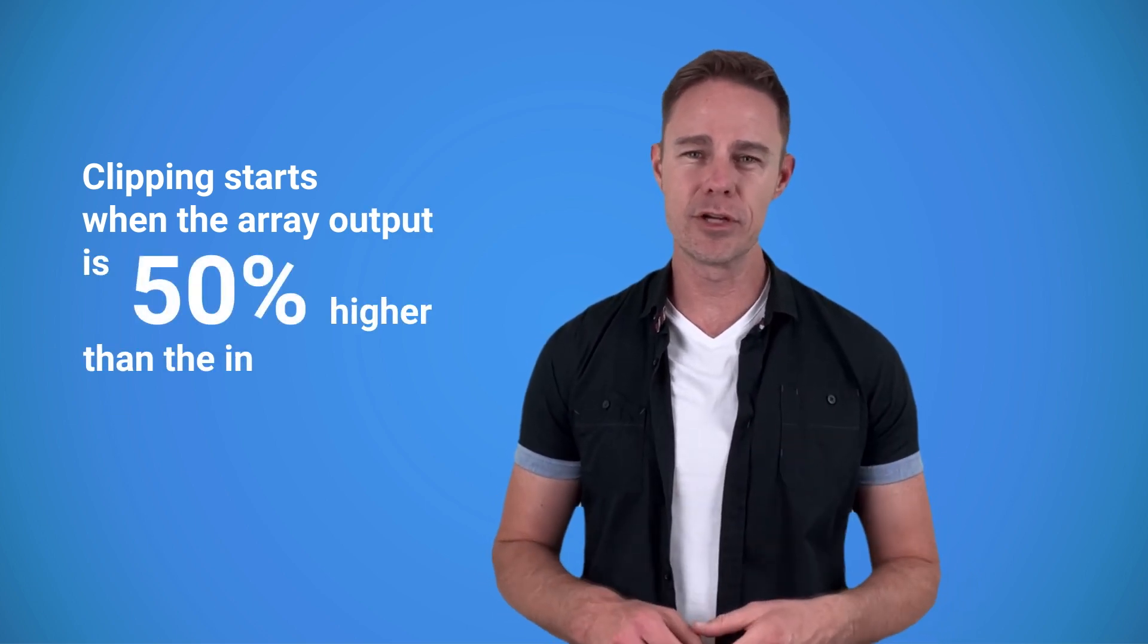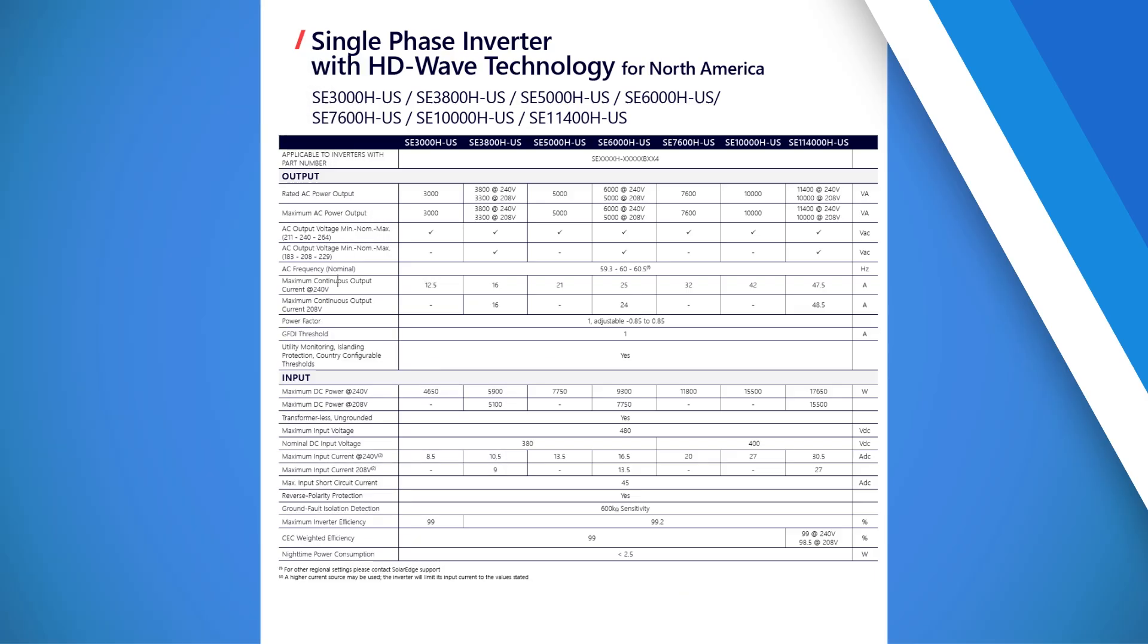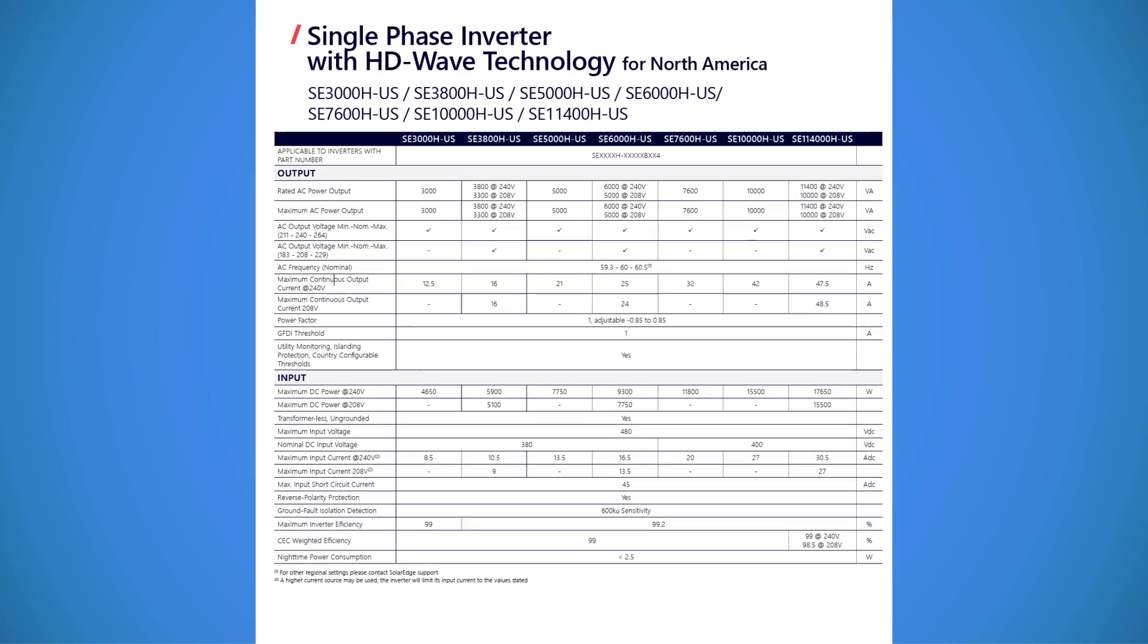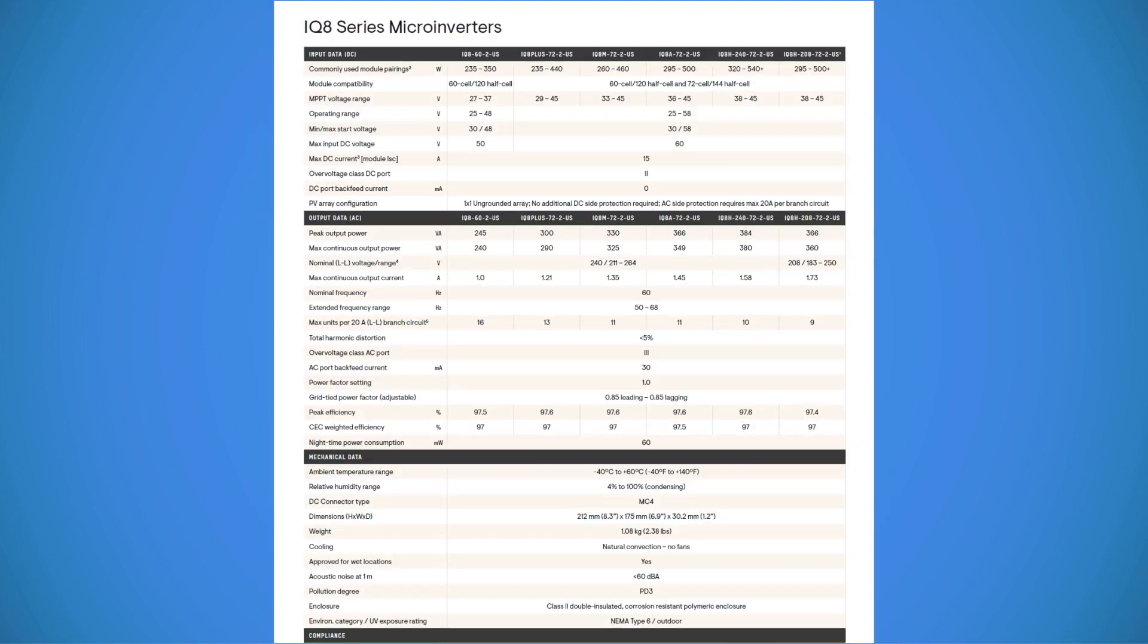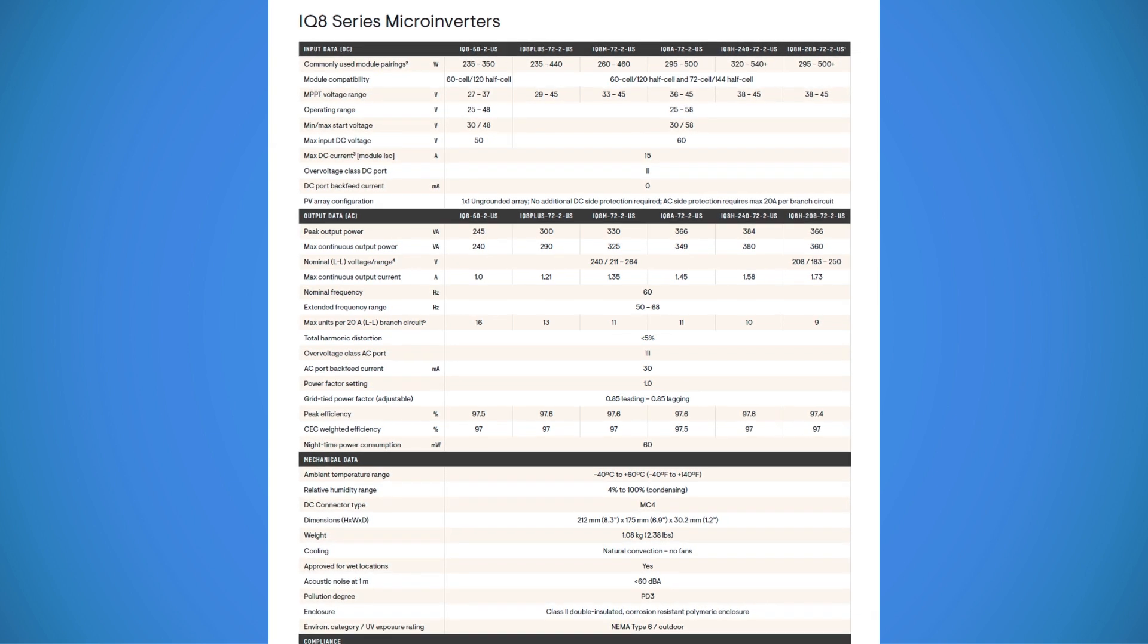Every model is different, but on average clipping starts when the array output is 50 percent higher than the inverter's capacity. You also don't want to install a solar inverter that's too big for your system because the inverter is going to be most efficient if it's running close to its overall capacity. Another thing you should check is that the voltage and current from your panels should not exceed safe levels for the inverter. You can find the maximum voltage and current input in every inverter's data sheet.